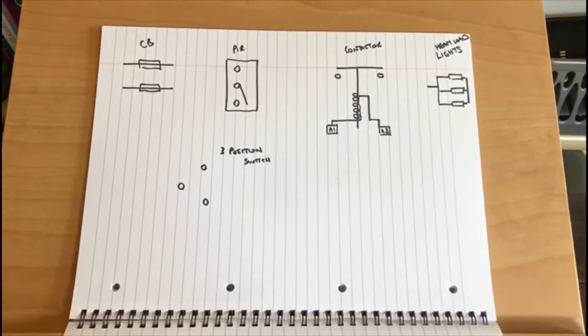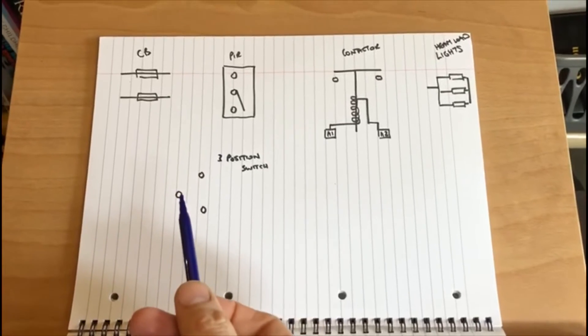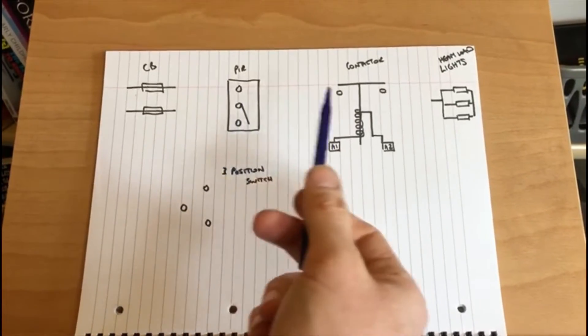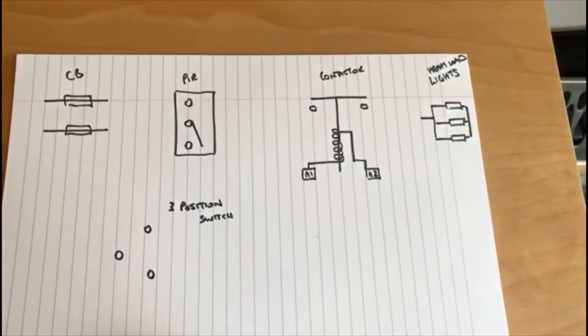So this time it's very similar to the circuit previously using a three position switch again, the PIR, the contactor, the lighting load. This time though it's a heavier lighting load.